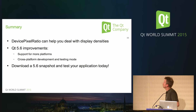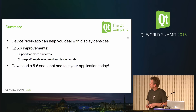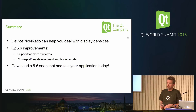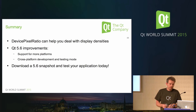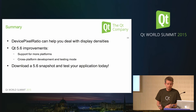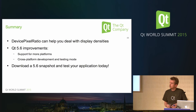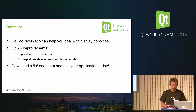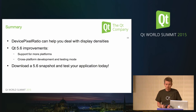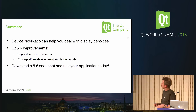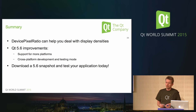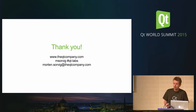To sum up: the device pixel ratio is a new mode in Qt that can help you deal with different display densities. We have some exciting Qt 5.6 improvements — support for more platforms and a cross-platform development and testing mode. I would encourage you to download a 5.6 snapshot and test your application today. Thank you.